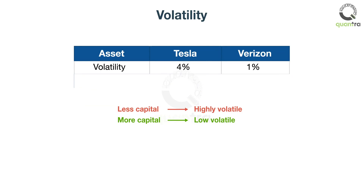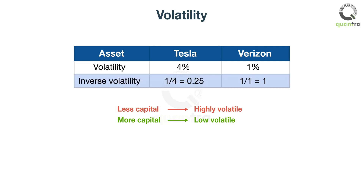John looked at the volatility of Verizon and Tesla and figured out that he needs to allocate more capital to Verizon compared to Tesla. But how much more? John decided to allocate capital inversely to the volatility. He calculated the inverse volatility of Tesla and Verizon, and the sum of inverse volatility came out to 1.25.